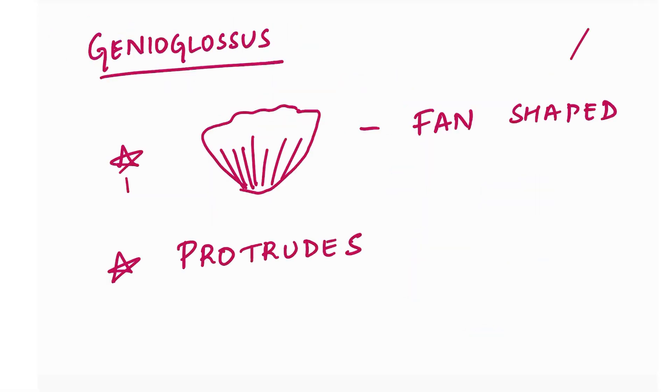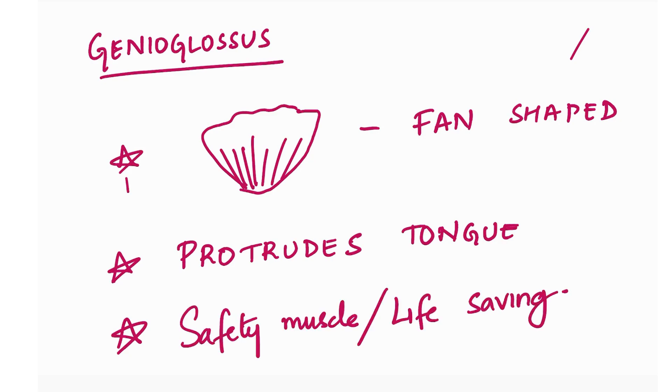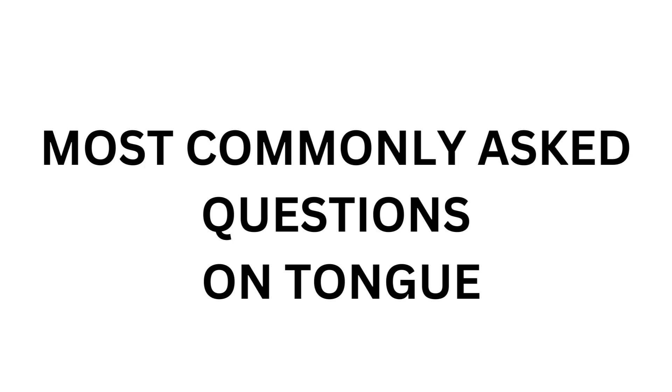Out of the extrinsic muscles, I'd like to talk about genioglossus. It's a fan-shaped muscle and the main function is to protrude the tongue. This is also called a safety muscle or life-saving muscle because it prevents the tongue from falling back and causing respiratory distress.